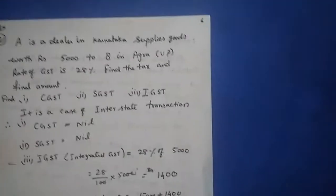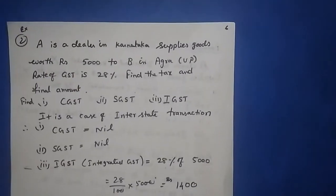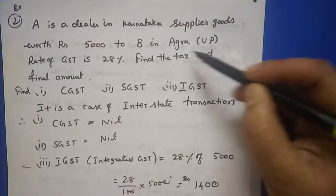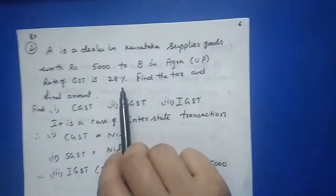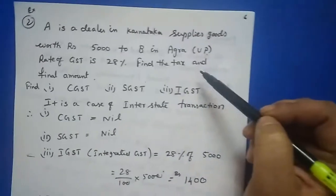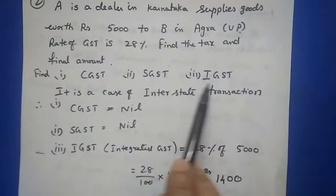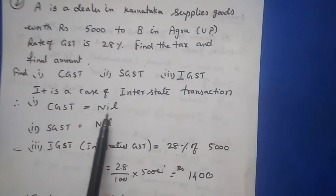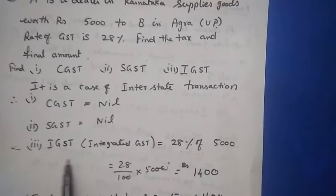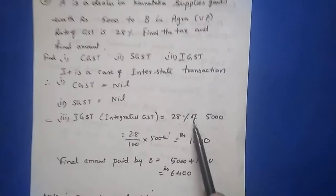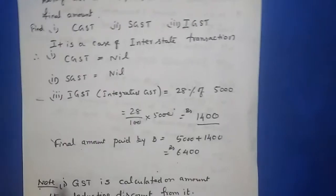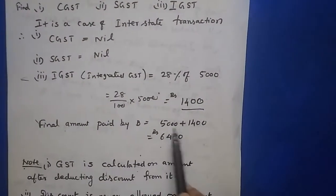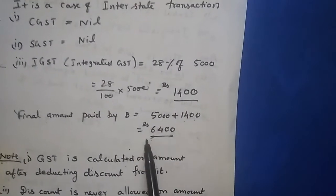Example 2: A is a dealer in Karnataka supplying goods worth ₹5,000 to B in Agra, UP. Since Karnataka to UP is interstate, CGST = nil and SGST = nil. Only IGST applies at the full rate: IGST = 28% of ₹5,000 = 28/100 × 5,000 = ₹1,400. Therefore, final amount paid by B to A = ₹5,000 + ₹1,400 = ₹6,400.